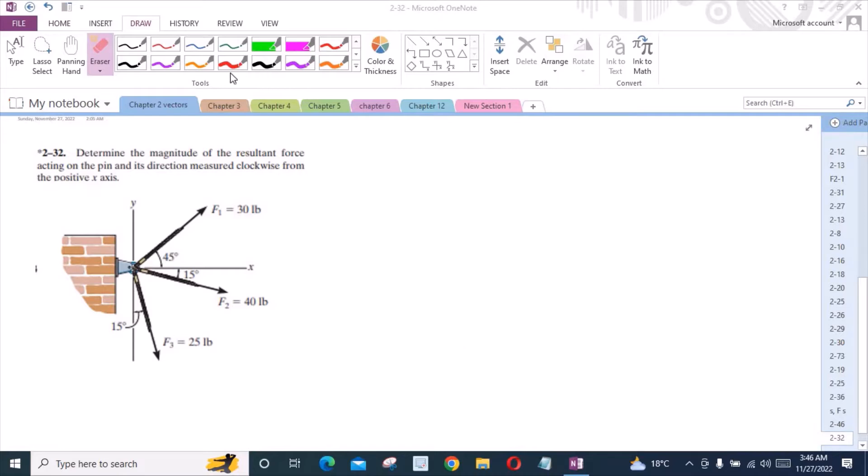For the force F1, I have one horizontal component and one vertical component. This angle right here is also 45 degrees because these two angles are alternate to each other. This is F1 cos 45 degrees and this component is F1 sin 45 degrees.